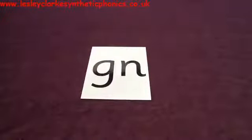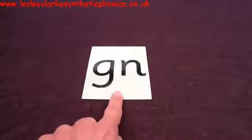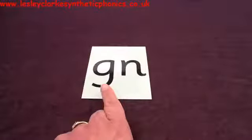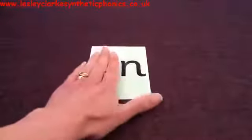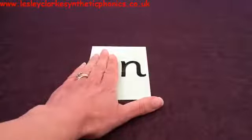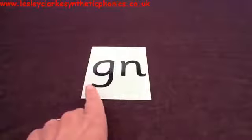Hello again. Today we are going to practice reading words which have this grapheme in. These two letters together make 'n' — exactly the same sound as this letter on its own. That makes 'n' and the two of them together make 'n'. Let's have a go at reading some words with that 'gn' grapheme in.